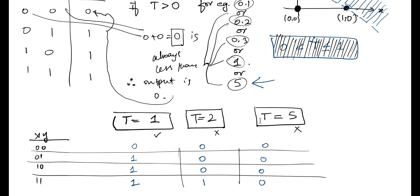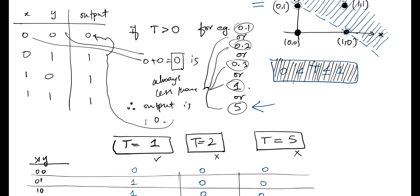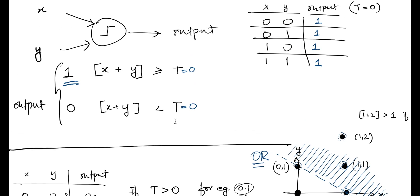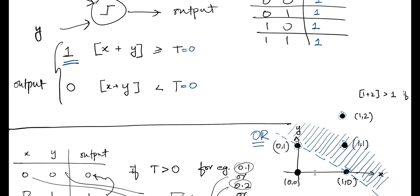We looked at a threshold value of 1, a threshold value of 2, and a threshold value of 5. The idea being very simple: taking the inputs, adding them at the neuron, and comparing them against the threshold. We figured out that with T equal to 1 as a threshold, we would be able to classify these four data points separately from the data point at the origin.